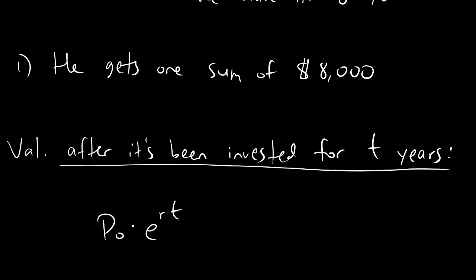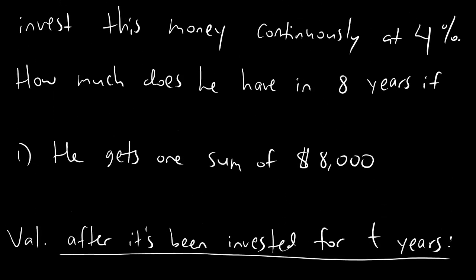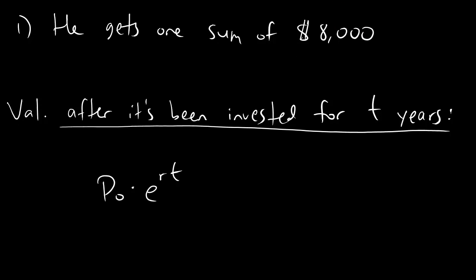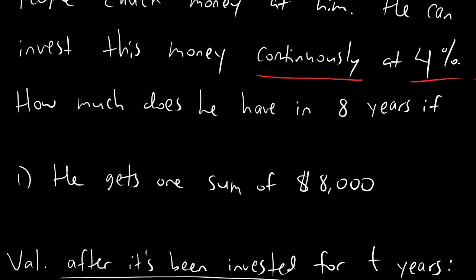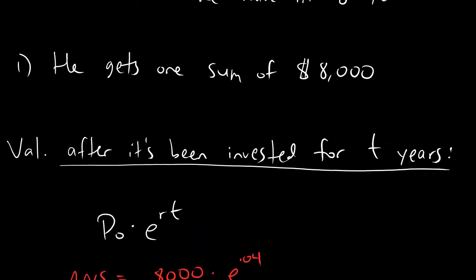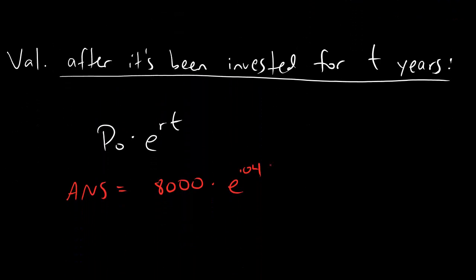Remember, specifically it says he invests this money continuously. Whenever you see the word continuous, you use the Pert equation. So if we're getting a single sum of $8,000, the answer is going to be $8,000 times E to the 0.04 — because that's our interest rate — and this is going to be invested for 8 years, so 0.04 times 8. And you would get something like $11,017.